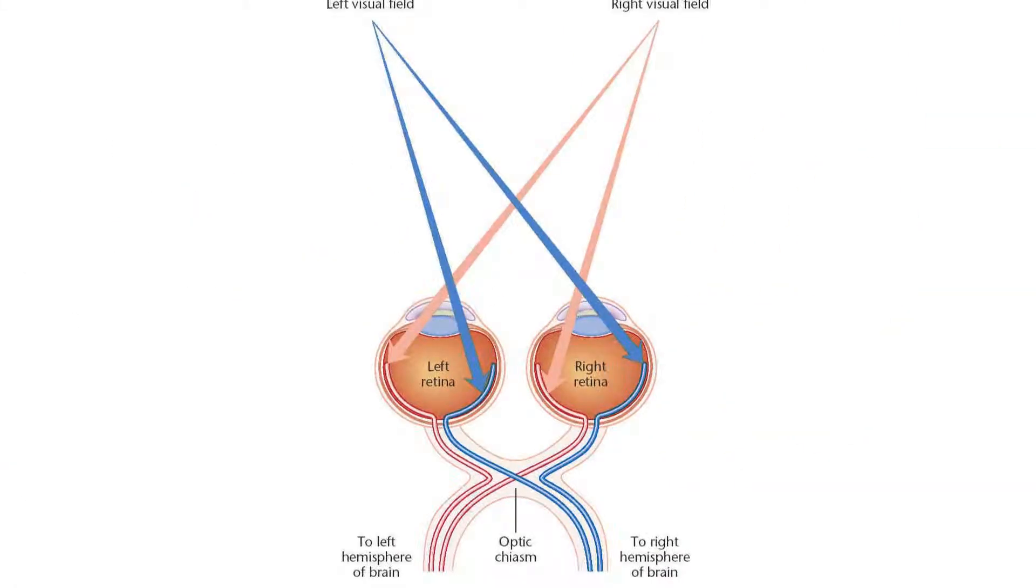Information from the ipsilateral visual field goes to the nasal portion of each eye, closer to the nose. Information from the contralateral visual field goes to the temporal portion of the retina, closer to the temples.